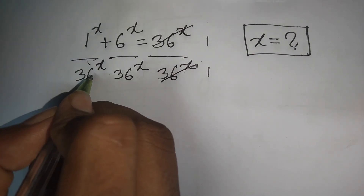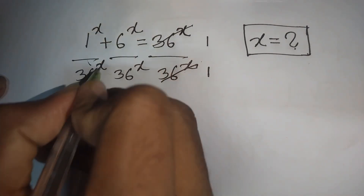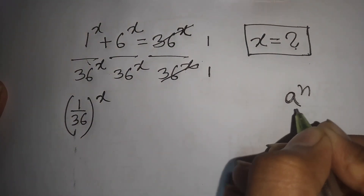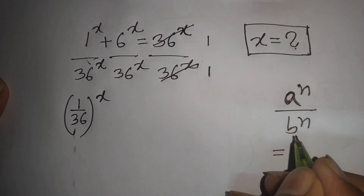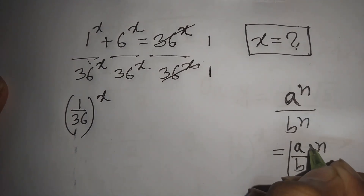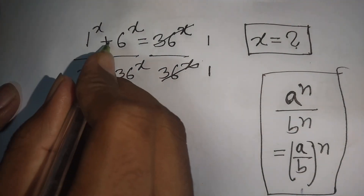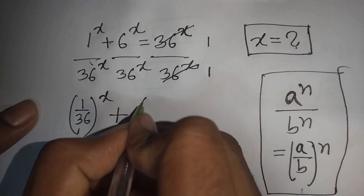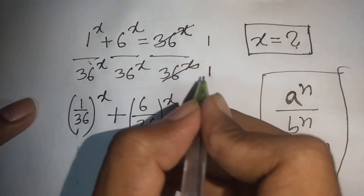Now, 1^x divided by 36^x can be written as (1/36)^x, because they have the same power but different bases. According to the formula: a^n · b^n = (a·b)^n. Applying this formula, plus similarly, 6^x divided by 36^x can be written as (6/36)^x, which equals 1.